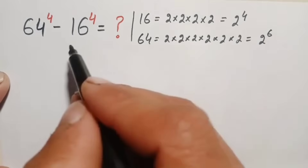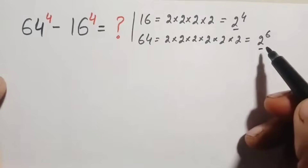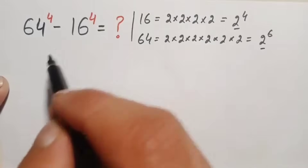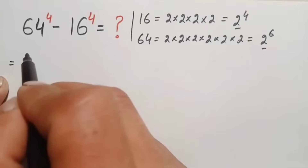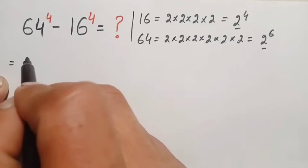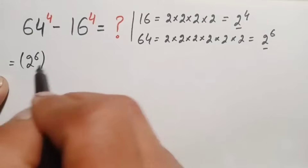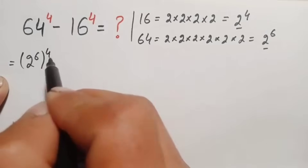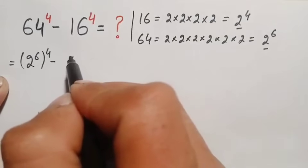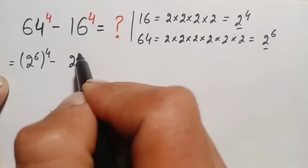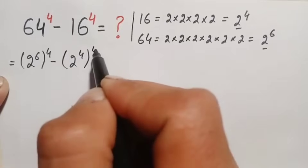Now we replace these two numbers with their exponential values. The expression becomes 64 — that is (2 raised to power 6) whole raised to power 4 — minus 16 — that is (2 raised to power 4) whole raised to power 4.